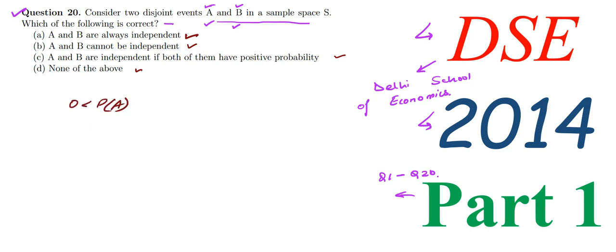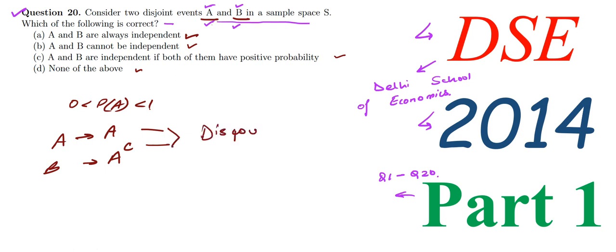Let us consider the probability of A. It can lie between 0 to 1. So let us assume our event A to be as it is, and let the event B be A complement. We have not been told anything specific about events A and B, so we are assuming A to be an event and B to be the complement of A. Seeing these two, we can say that these two are disjoint events.